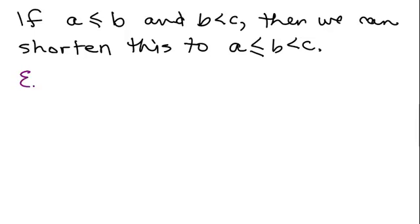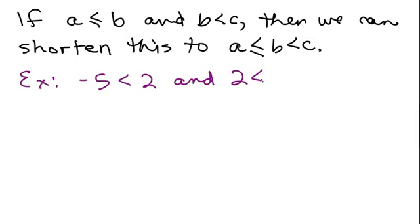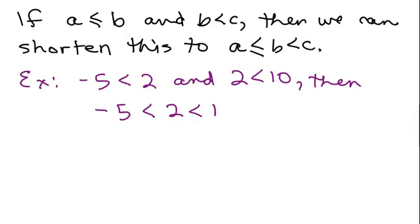Here's an example. Let's say we know that negative 5 is less than 2, and we know that 2 is less than 10. Then I'm able to just write that as negative 5 is smaller than 2, which is smaller than 10. So the shortcut way of writing negative 5 is less than 2 and also 2 is less than 10.